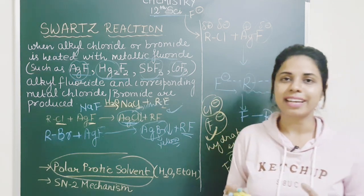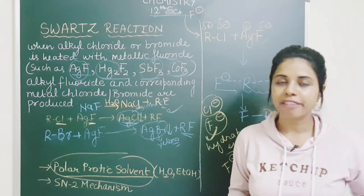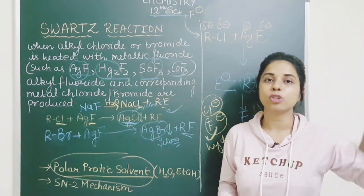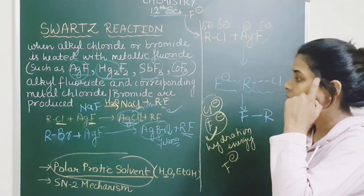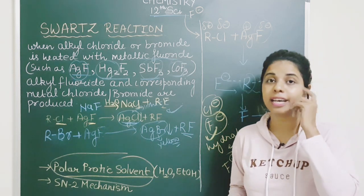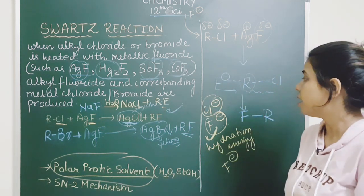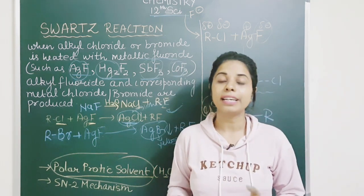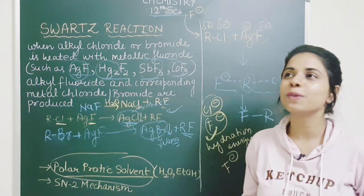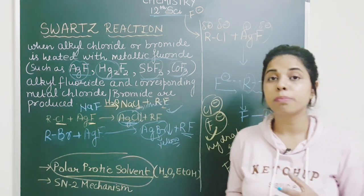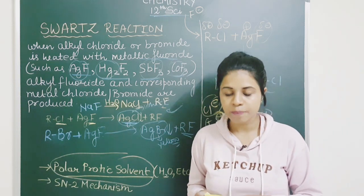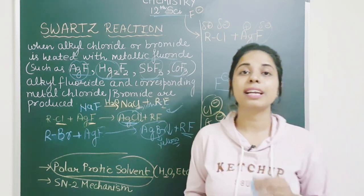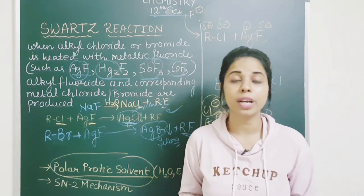So that's all about the Swarts reaction. While using heavy metals and a polar protic solvent, the heavy metals have low solubility and the reaction follows SN2 mechanism — you have very valid reasons for all the choices made. If you liked it, stay tuned for the next video. The next video will be based on the preparation of Haloarenes — all the methods for preparation of Haloarenes. Very soon I will upload. Thank you so much.